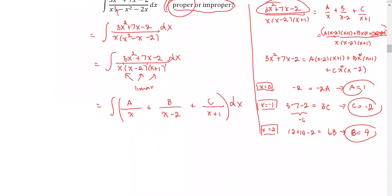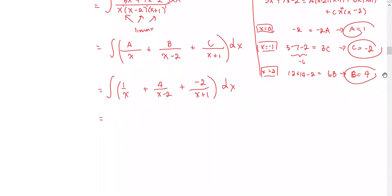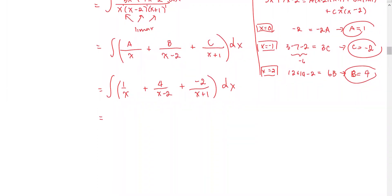We bring A, B, and C back into the integration. For the partial fractions: A over x becomes 1 over x; B over x minus 2 becomes 4 over x minus 2; and C over x plus 1 becomes negative 2 over x plus 1. Next, we find the antiderivative of each partial fraction. The antiderivative of 1 over x is natural log of the absolute value of x; for 4 over x minus 2, it is 4 times natural log of |x minus 2|; and for negative 2 over x plus 1, it is negative 2 times natural log of |x plus 1|, plus the constant C.